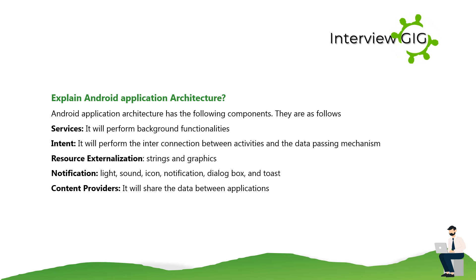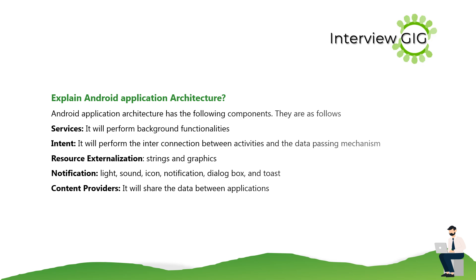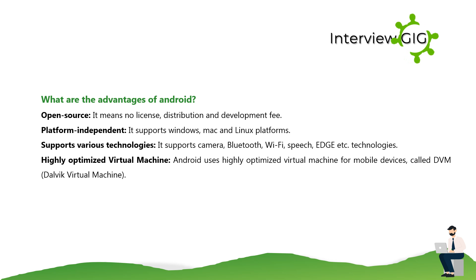What is Android application architecture? Android application architecture has the following components: services, which perform background functionalities; intents, which perform the interconnection between activities and the data passing mechanism; resource externalization for strings and graphics; notifications including light, sound, icon, notification dialog box, and toast; and content providers, which share data between applications.